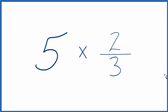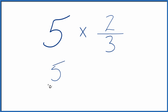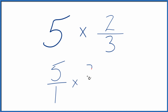Maybe an easier way would be to take 5 and think of it as 5 over 1, because 5 divided by 1 is still 5 — we're just dividing by 1. We take 5 over 1 times 2 thirds, and now when we multiply fractions, we multiply the numerators and the denominators.